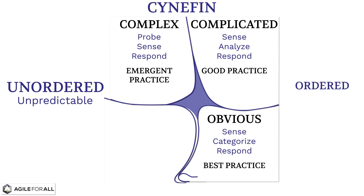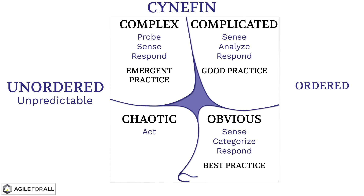On the bottom left, we have a type of system where cause and effect are not related. Chaotic systems can be created intentionally for the purposes of innovation, or accidentally. When they are entered accidentally, the decision-making process is to act rapidly to stabilize the situation, sense whether the system is now stable, then respond accordingly. With no cause and effect clear, this is the realm of novel practice.